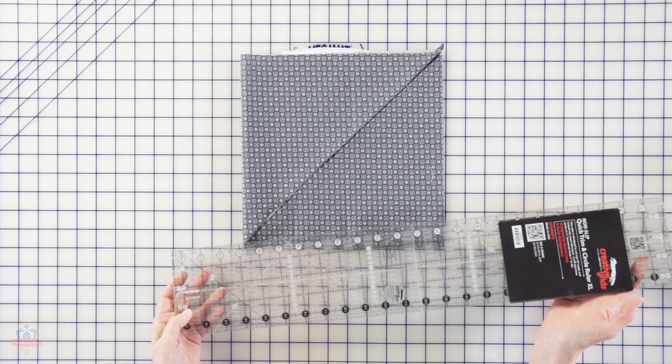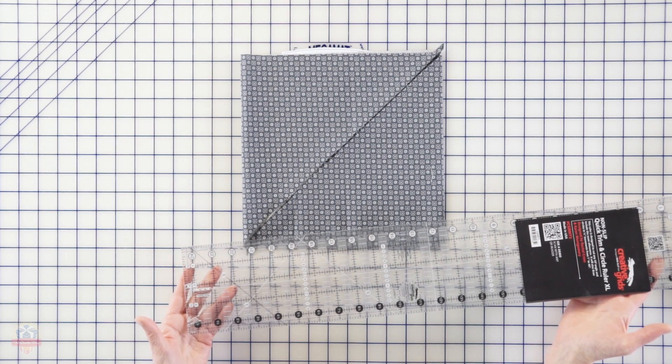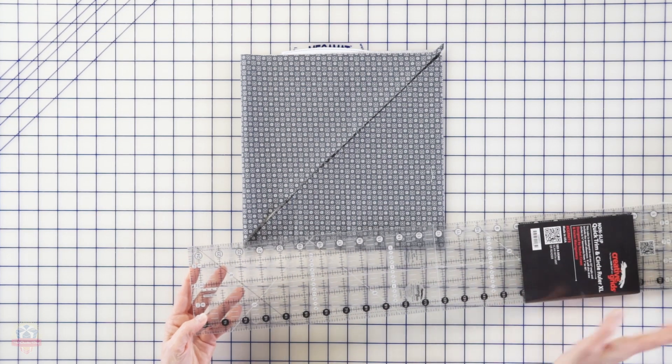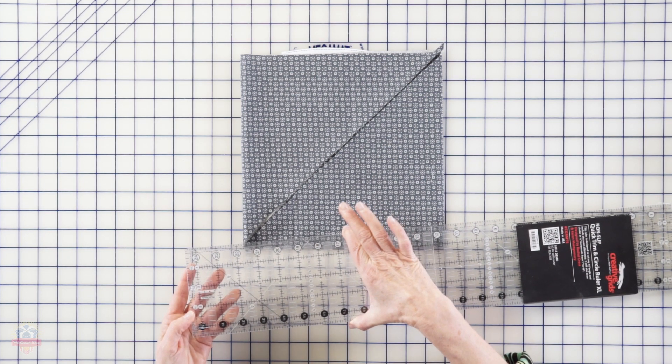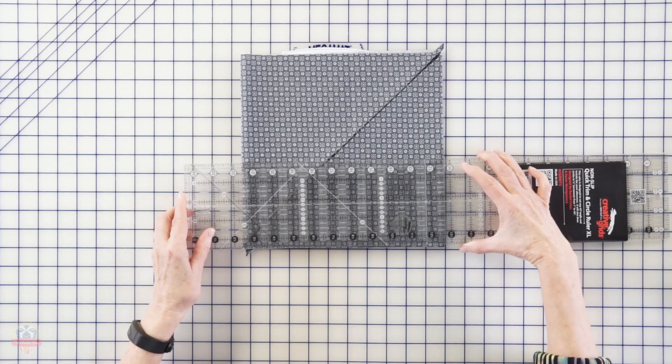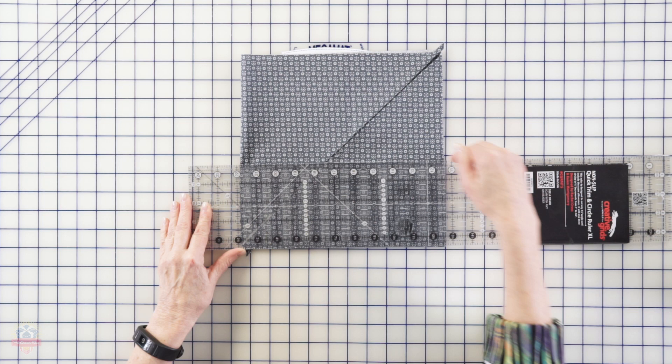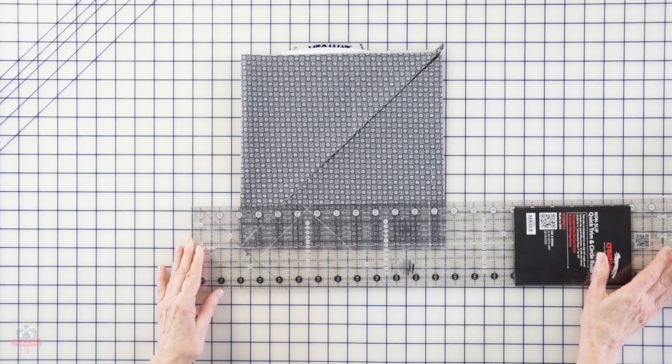This is one of my favorite rulers to use for cutting binding - it's the Creative Grids Quick Trim and Circle Ruler XL. What I love about it is it's exactly four and a half inches wide. I like to cut my bindings at two and a quarter, so two and a quarter times two is four and a half. If I lay this on here and cut, I get two strips width cut right at once.